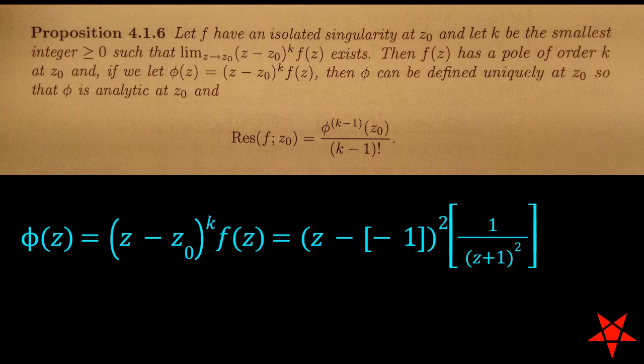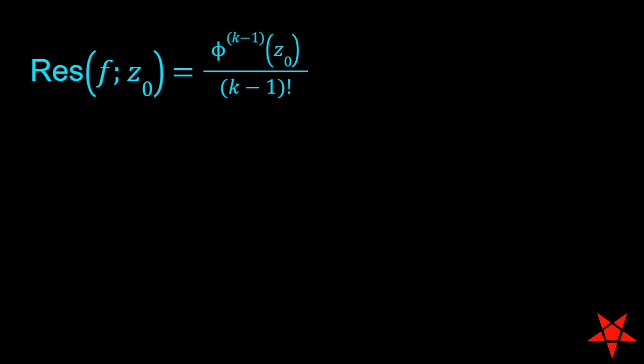Having established that k equals 2, we can now calculate a value for phi of z, and after canceling out the z plus 1 terms, we have phi of z equals the constant 1. Plugging k into the residue formula listed in Proposition 4.16 tells us that we need to calculate the first derivative of phi of z and evaluate it at z0.